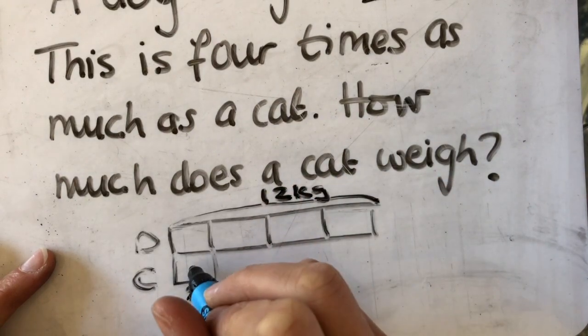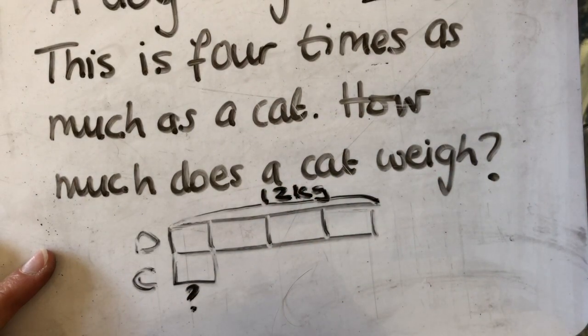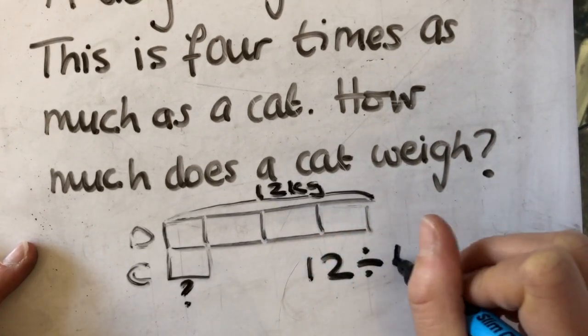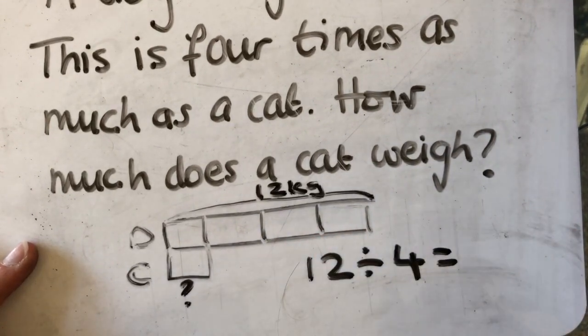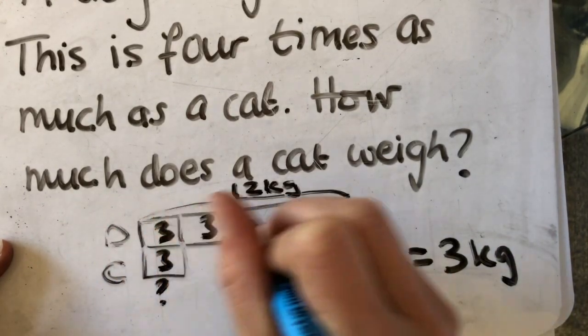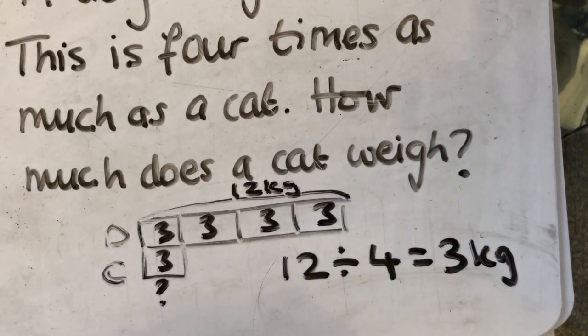I'm trying to work out what this one is here. So I can see that if I did 12 divided by 4, I would find out that unknown number, which might be 3. So each of these squares must be 3 kilograms.